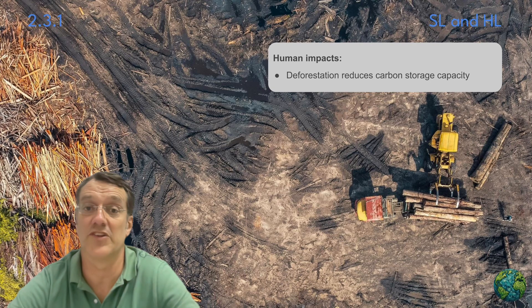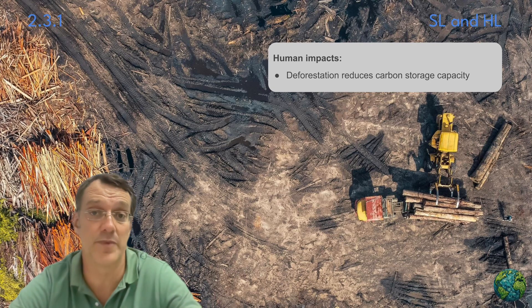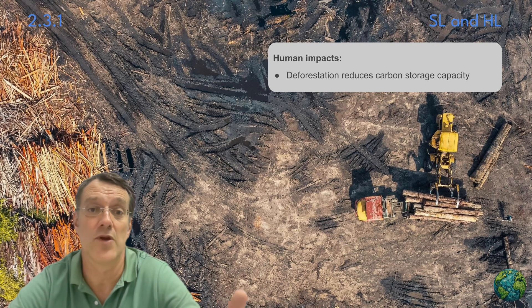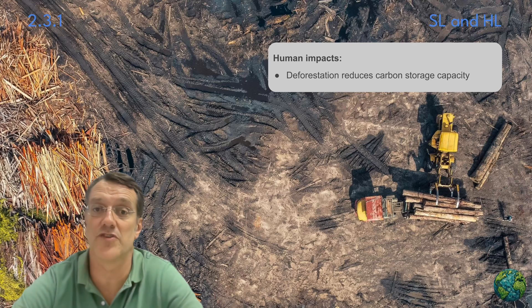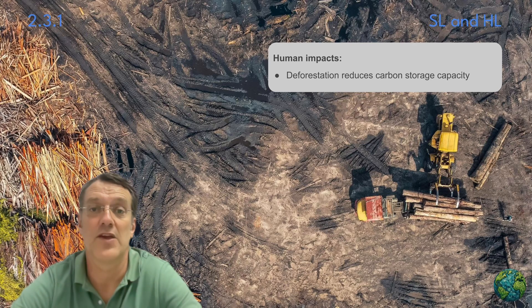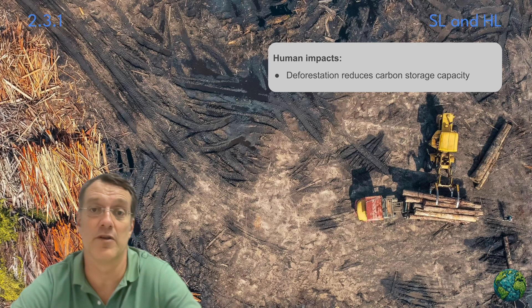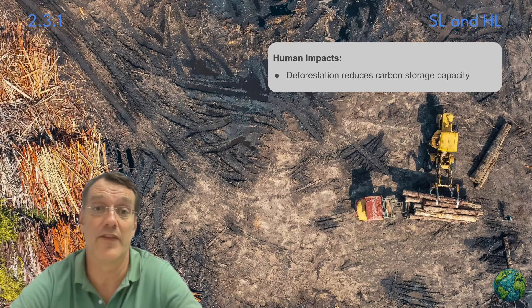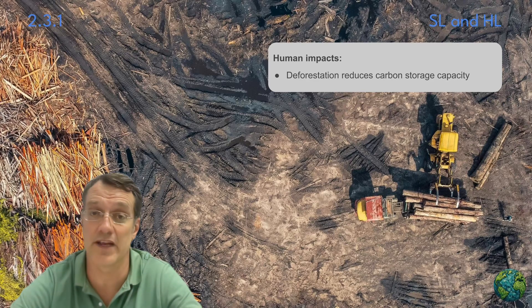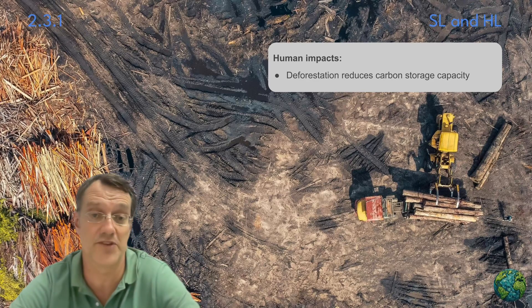Deforestation represents another major human impact. When forests are cleared, we lose critical carbon storage capacity. Trees that once sequestered carbon are removed, and the stored carbon is then often released through burning or decomposition.